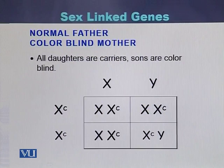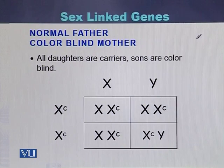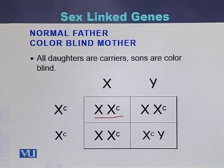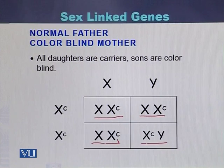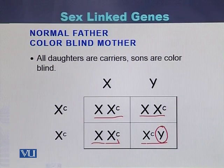If we perform a cross between a normal father and a color blind mother, all daughters will be carriers and all sons will be color blind. In males, there is a Y chromosome and only one X allele, so due to that one affected allele, all sons will be color blind.